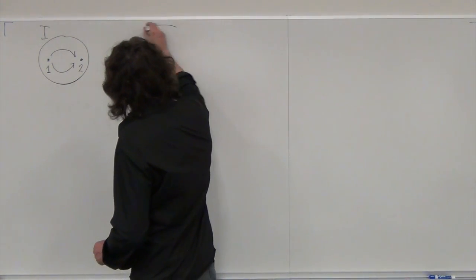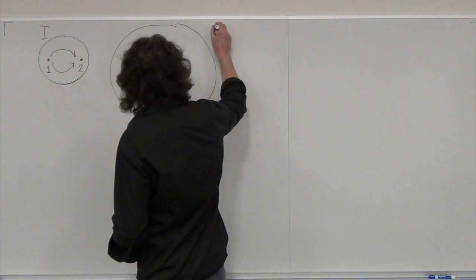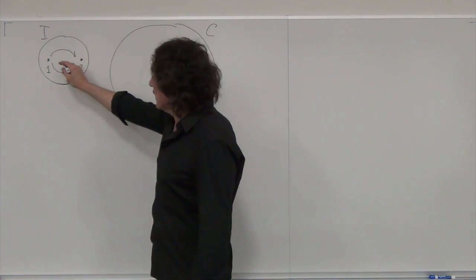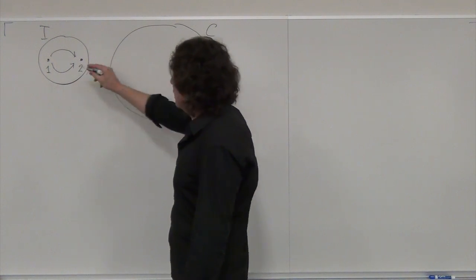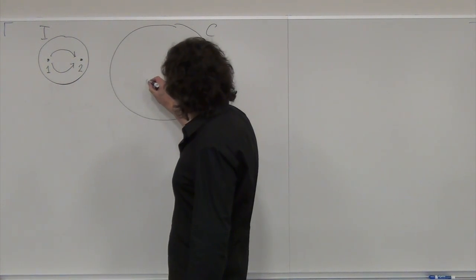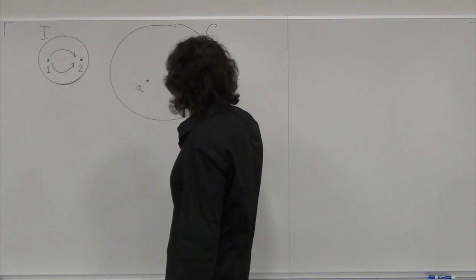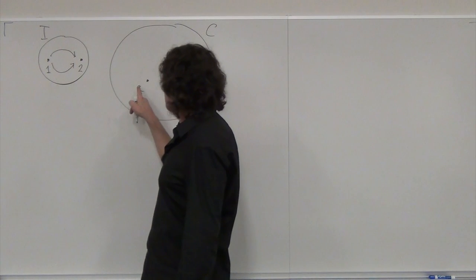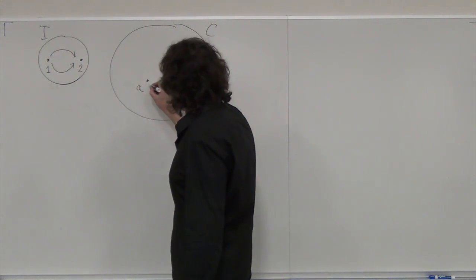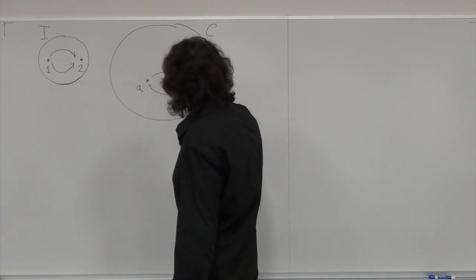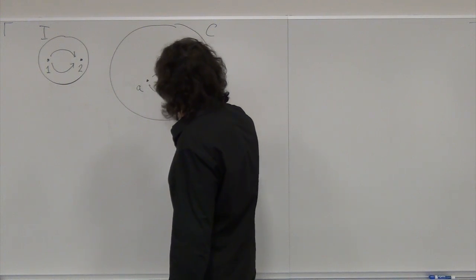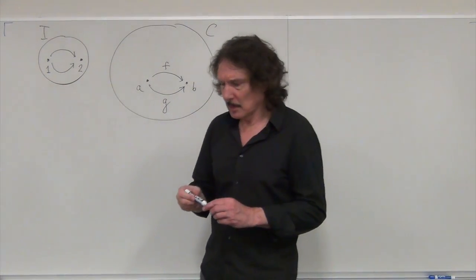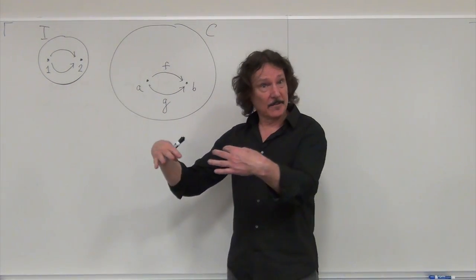What does the cone look like? We have a category C. The base of the cone will select some objects A and B, mapping 1 into A and 2 into B, and two morphisms. Let's call this morphism F and this morphism G. That's the base of our cone.